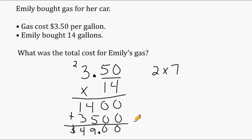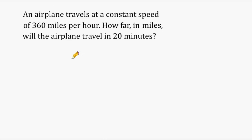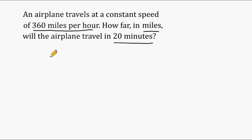Let's do another example. An airplane travels at a constant speed of 360 miles per hour. How far will the airplane travel in 20 minutes? For many people this is just mental math — the plane travels 360 miles in one hour and we need to figure out how far it goes in 20 minutes. All we have to do is take 360 and divide it into three equal parts, which is 120 miles.